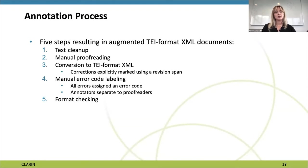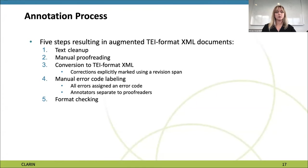The annotation process consists of five steps, resulting in an augmented TEI format XML document. The first step is text cleanup, where XML files of the Gigaword corpus are converted to text files, then manually proofread and converted to TEI format XML documents, in which all corrections are explicitly marked using a revision span. The fourth step is manual error labeling, where each error is assigned an error code by annotators separate from the proofreaders. The fifth and final step is format checking, where we verify that the XML structure is readable and all error codes belong to the annotation scheme.